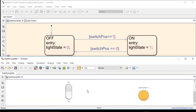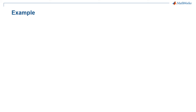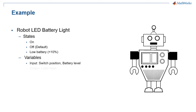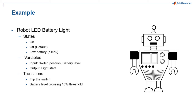Now that we've seen the simple light example, let's stop our simulation and expand this into something with a little more complexity. For our next example, let's say we've created a robot with an LED light to indicate battery power. The LED light should be green if the power is on and the battery level is high. It should turn off if the power is off. And if the power is on but the battery is low, it should be red for three seconds before turning off to conserve battery power. So the states will now include on and off as before, plus a third state for low battery mode — when we have less than 10% battery power. Variables will include switch position and battery level as inputs, with light state as output. Transitions include the switch flip, the battery level crossing the 10% threshold, and after three seconds in low battery mode, transitioning to the off state.